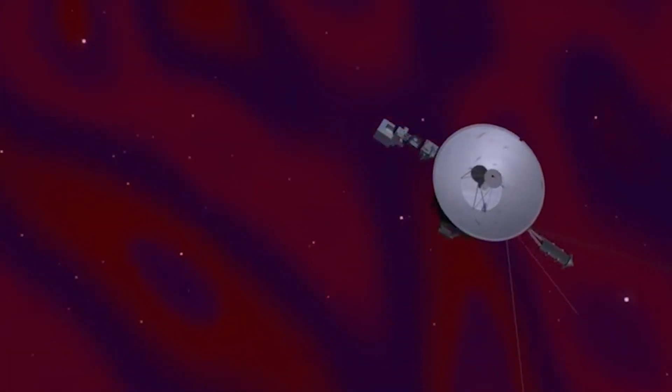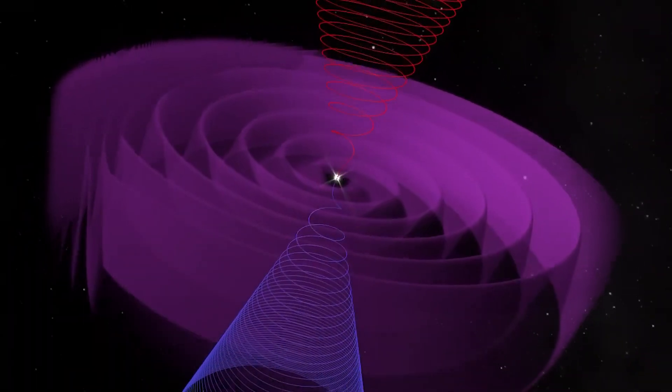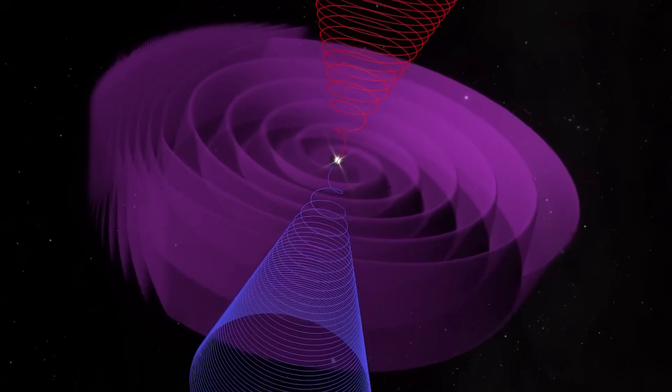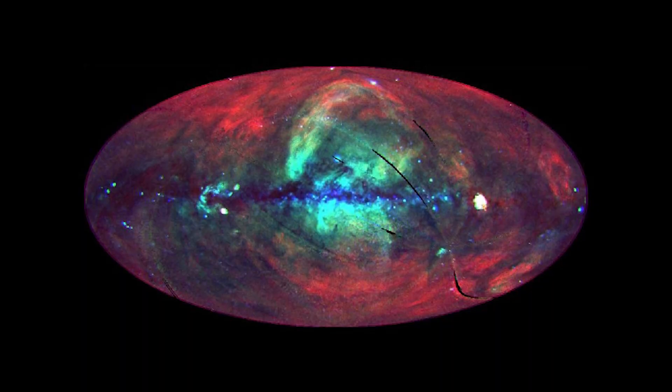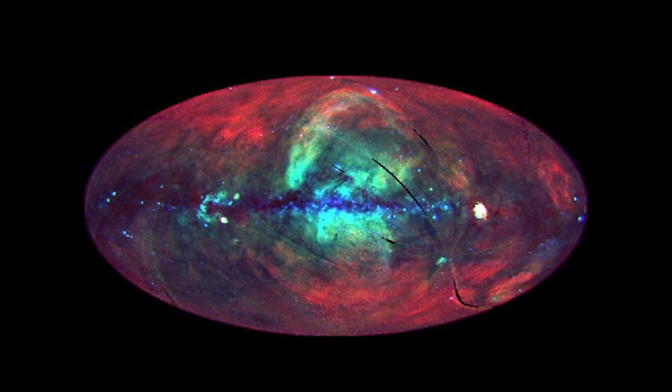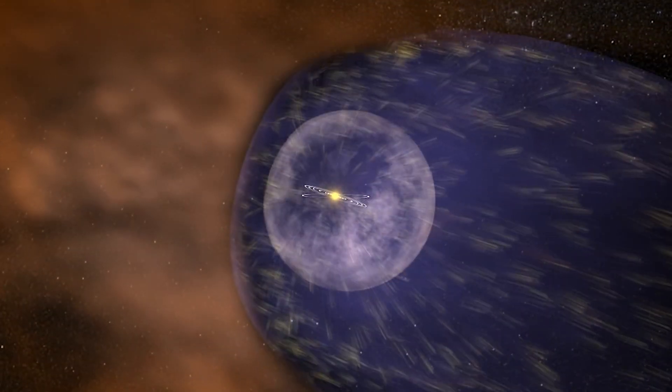While journeying through the heliosheath, the Voyager probe recorded a decline in the intensity of solar wind particles. This observation confirmed our expectations regarding the eventual decrease in solar wind speed as it interacts with the interstellar medium. This progressive weakening of particle intensity helped us identify the heliopause, which signifies the boundary where our solar system ends and interstellar space begins.